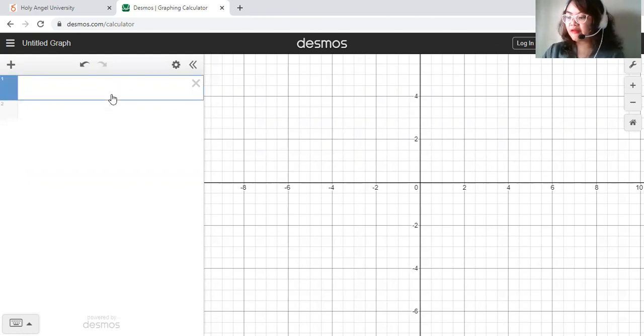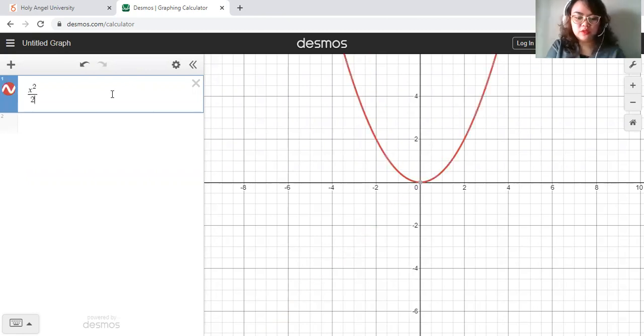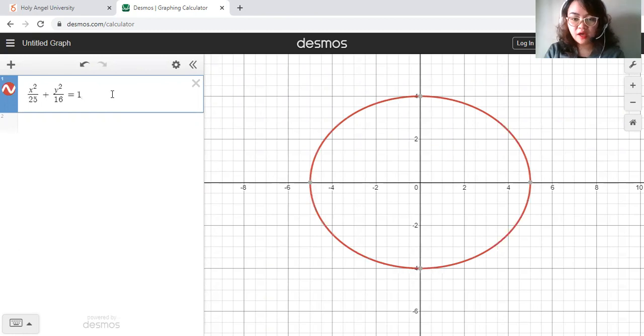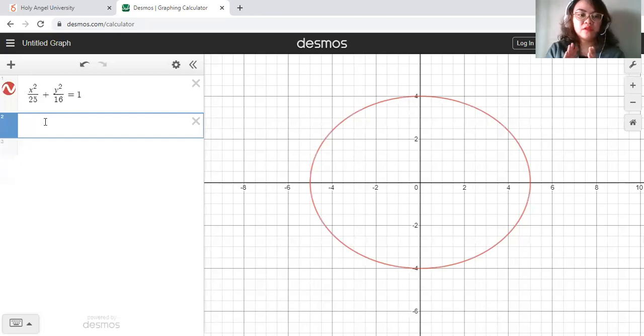Say we have an ellipse with the equation x squared over 25 plus y squared over 16 equals 1. We have this ellipse and then we plot the foci. The first foci would be 3, 0, and then this is labeled F1.